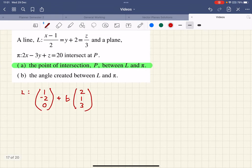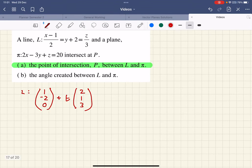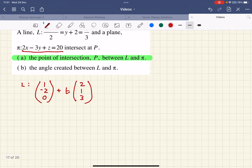What I'm going to do is simply substitute the general point into this plane to get the value of t. So the x value is 1 plus 2t, the y value is minus 2 plus t, and the z value is 3t.